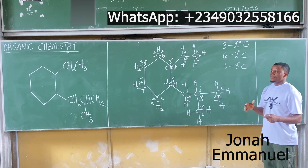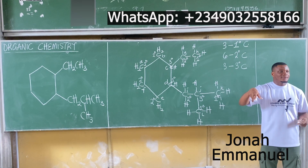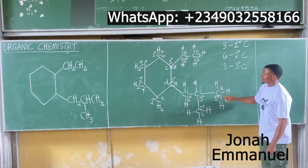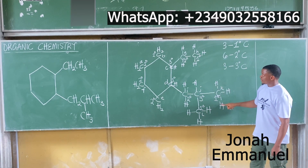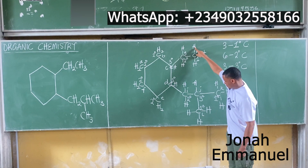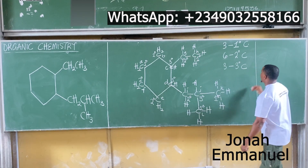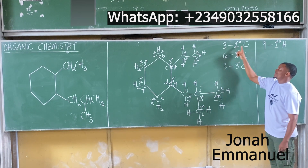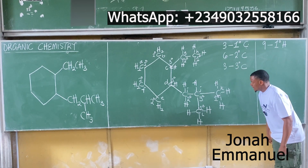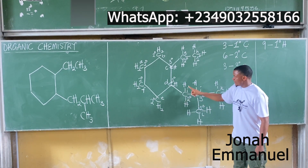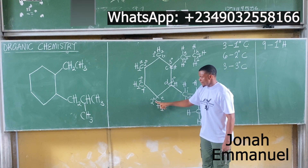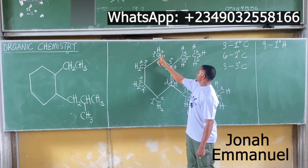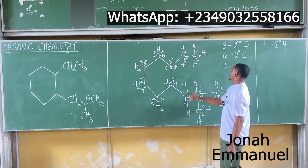Now let's get the number of hydrogens. The number of primary hydrogens equals 3 times the number of primary carbons. Counting all primary hydrogens: 1, 2, 3, 4, 5, 6, 7, 8, 9 — nine primary hydrogens. For secondary hydrogens: 2 per carbon — counting gives 1, 2, 3, 4, 5, 6, 7, 8, 9, 10, 11, 12 — twelve secondary hydrogens.